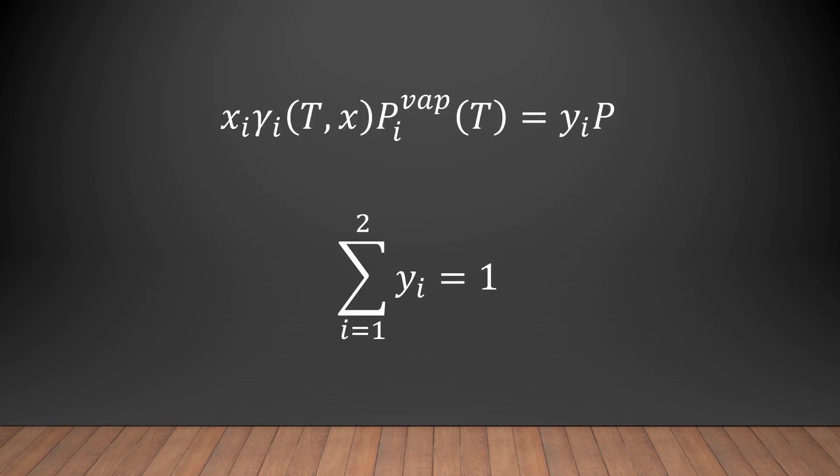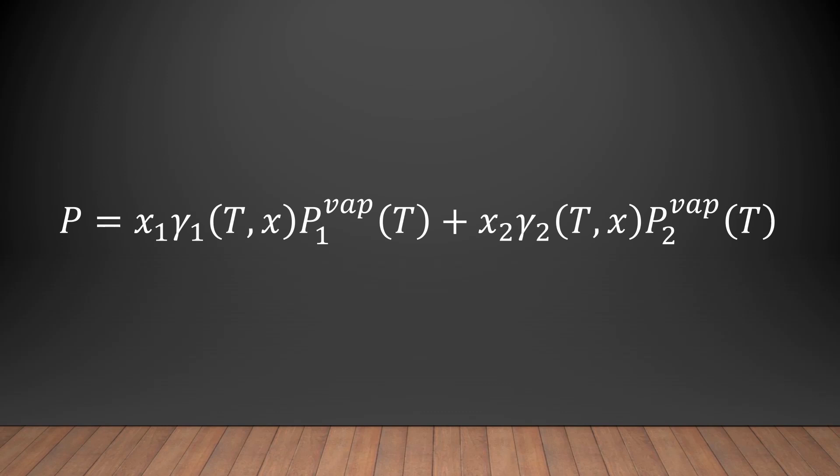Here's the combined equation for the mixture fugacity expressions of both the liquid and vapor phases of component I. We use this expression along with the definition of the vapor mole fraction, such that they sum to be 1, as seen below, to move on to the next equation. This expression states the total pressure of the system is equal to the sum of the liquid phase mixture fugacity. The mixture fugacity are expanded here to aid in the derivation of the next required equation.